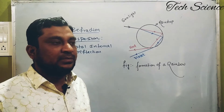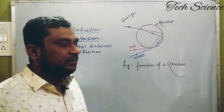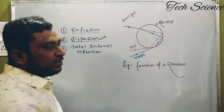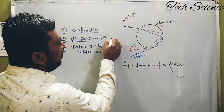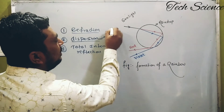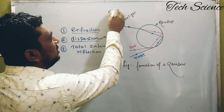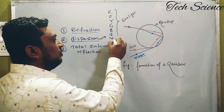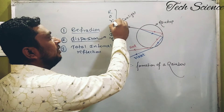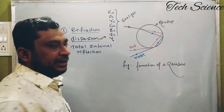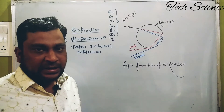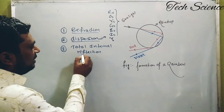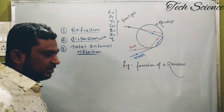Dispersion produces a kind of spectrum. The colors obtained through the splitting of white light into seven colors is called VIBGYOR — V-I-B-G-Y-O-R. VIBGYOR stands for Violet, Indigo, Blue, Green, Yellow, Orange, and Red. This splitting of white light into its component colors is called dispersion.